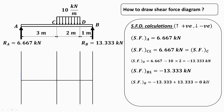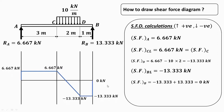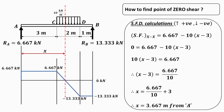Now we draw the shear force diagram. Shear force at A is 6.667 kN; at C-left and at C it is the same. At D it is minus 13.333 kN; at B-left it is the same, then becomes zero exactly at B. The diagram crosses from positive to negative — from positive 6.667 kN to minus 13.333 kN — and this crossing point is known as the point of zero shear.